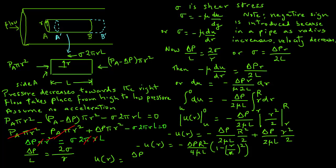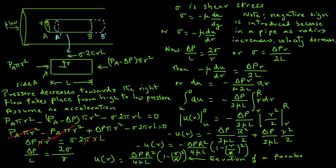Our final expression is U(r) = (ΔP·R²) / (4μL) × [1 − (r/R)²]. This is the equation of a parabola, and it tells us how the velocity U changes in the radial direction. This equation confirms that the velocity profile in the fully developed flow region of the pipe is parabolic in shape.